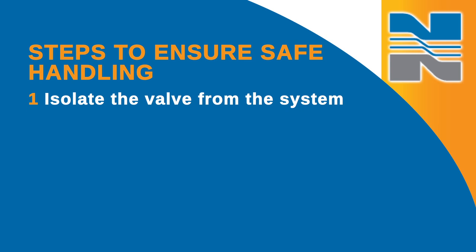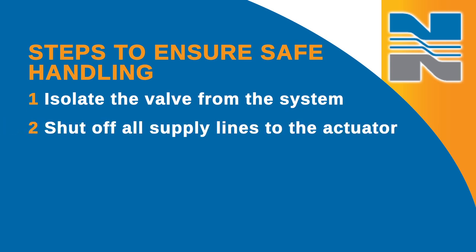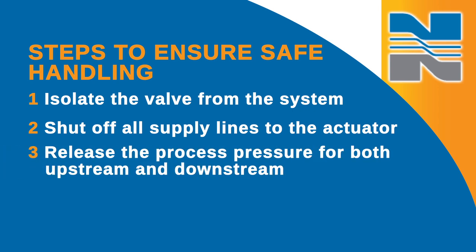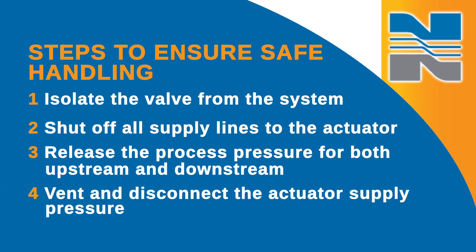First, isolate the valve from the system. Then, shut off all supply lines to the actuator and release the process pressure for both upstream and downstream. Finally, vent the actuator supply pressure.